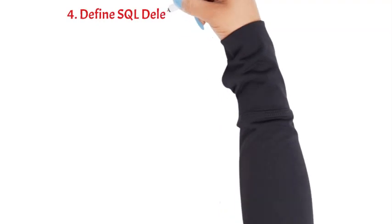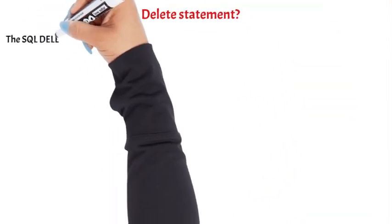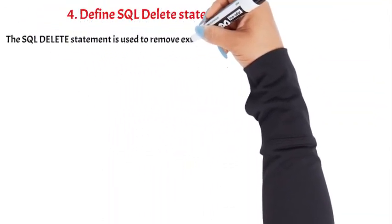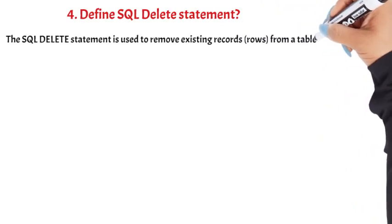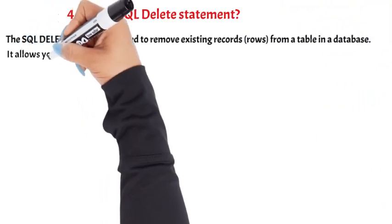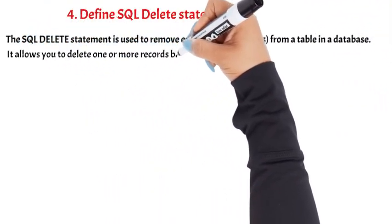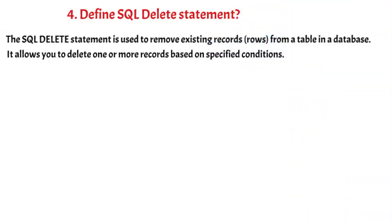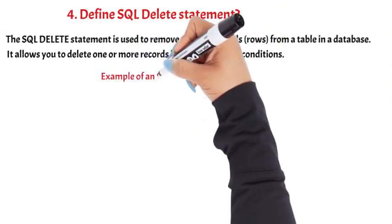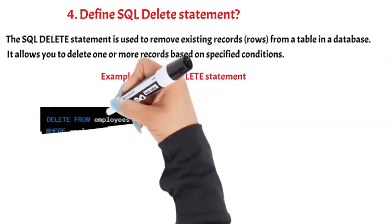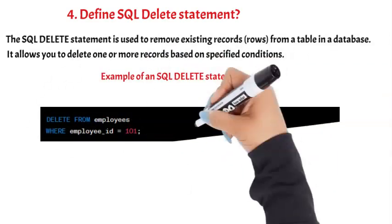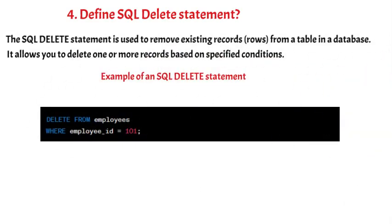Question 4: The SQL DELETE Statement. The SQL DELETE Statement is used to remove existing records (rows) from a table in a database. It allows you to delete one or more records based on specified conditions. In this example, the DELETE Statement removes the record from the employees table where the Employee_ID is 101. The entire row associated with that employee will be deleted.